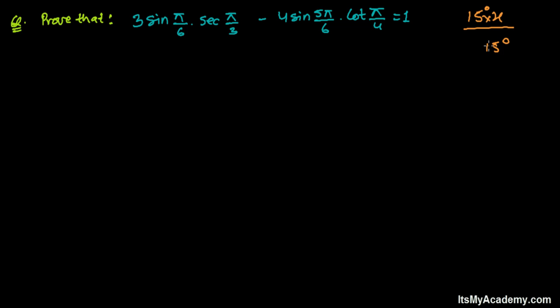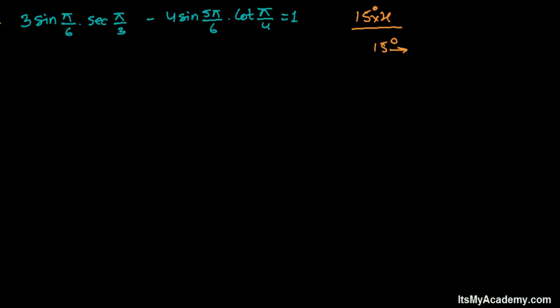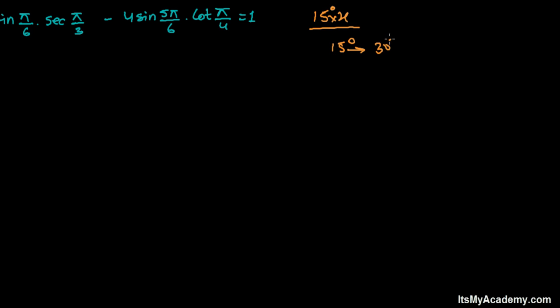Or any multiple of 15, like 30 degrees, 45 degrees, 60 degrees, 90 degrees, 120 degrees, 135 degrees, and so on. Any trigonometric ratio of such degrees we can easily find out without using a calculator. So these angles are called standard angles in trigonometry. Keep that in mind.